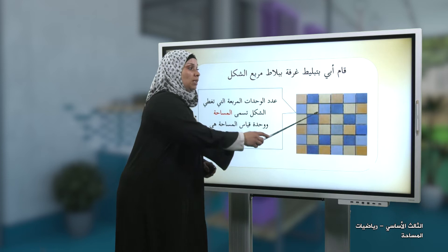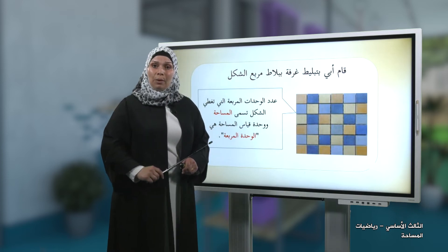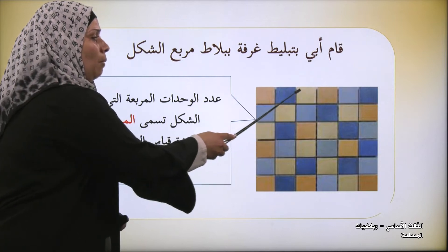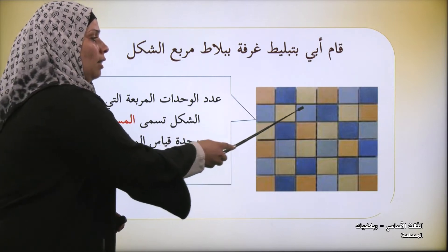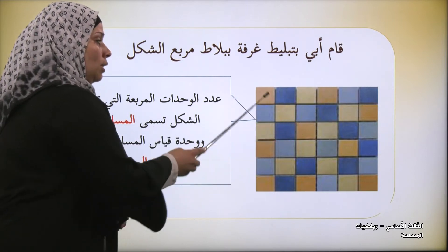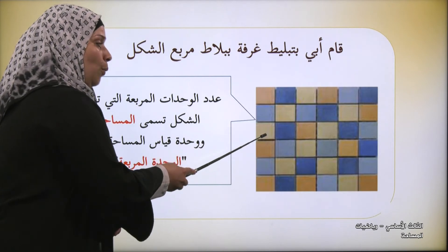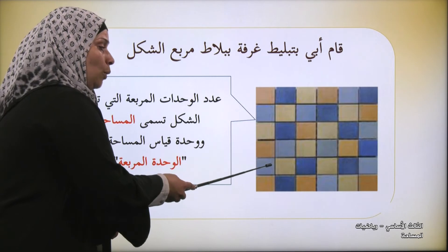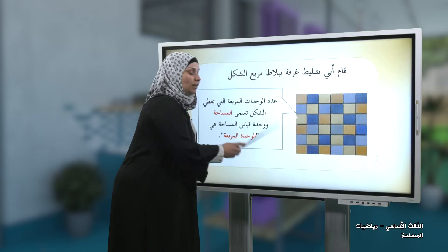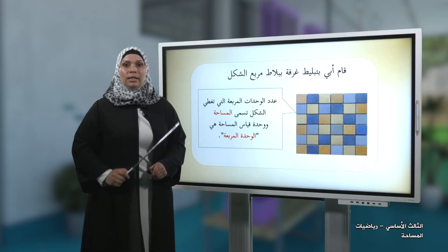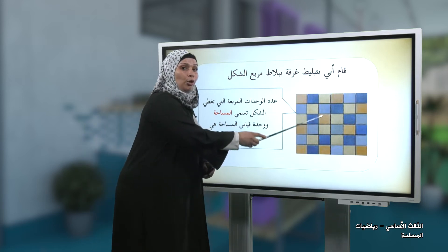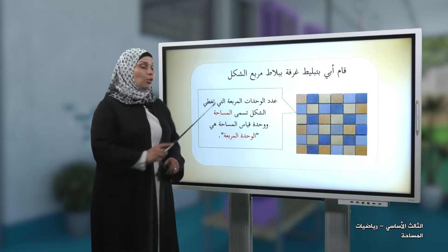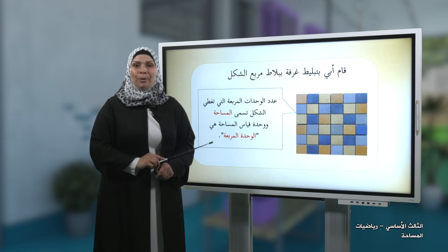هيا بنا نجد مساحة أرض الغرفة. نقوم بالعد: 1، 2، 3، 4، 5، 6 في كل صف. ثم نجمع: 6 و6 اثنا عشر، و6 ثمانية عشر، و6 أربعة وعشرون، و6 ثلاثون، و6 ستة وثلاثون. إذن مساحة أرض الغرفة التي قام والدي بتبليطها 36 وحدة مربعة.